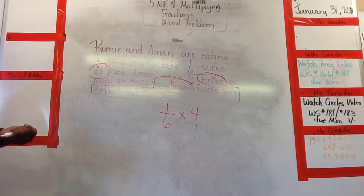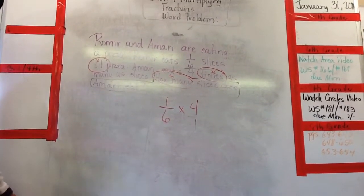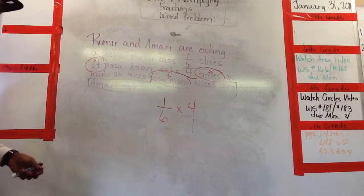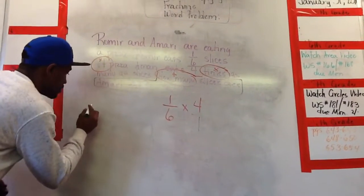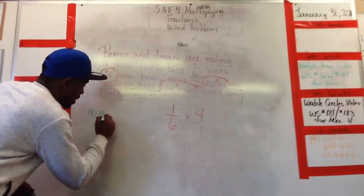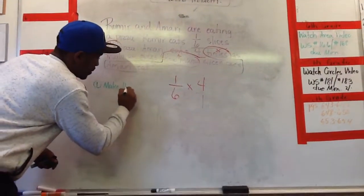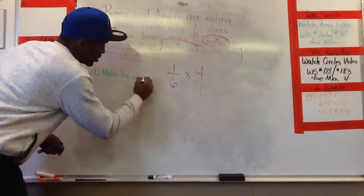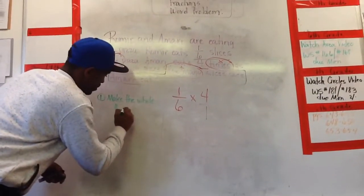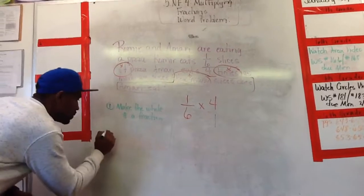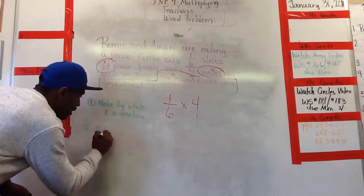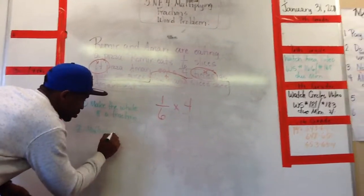Now I just - how do I multiply? Say it. Straight across. Okay. So step one was to make the whole number a fraction. Step two, multiply up. Straight across.